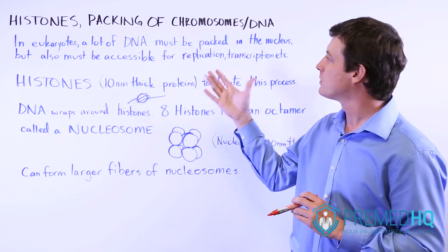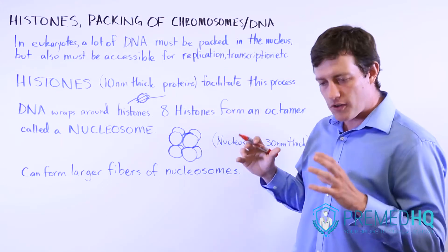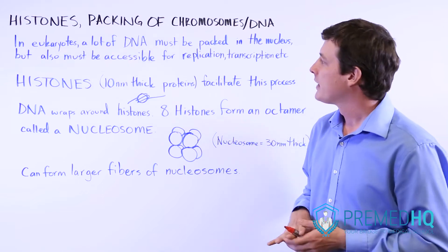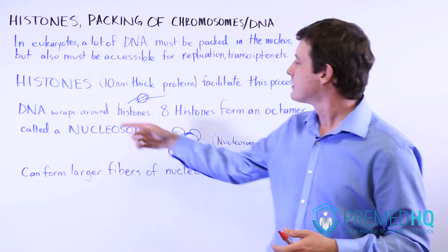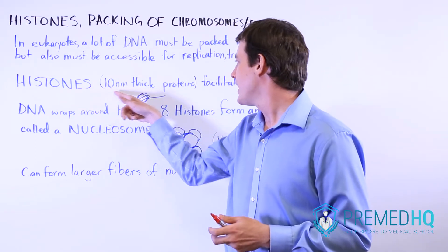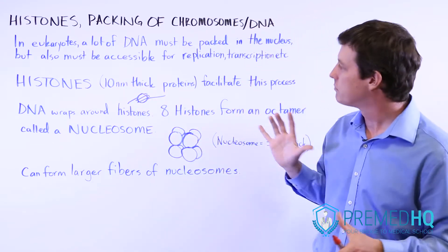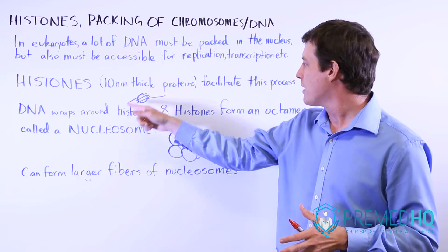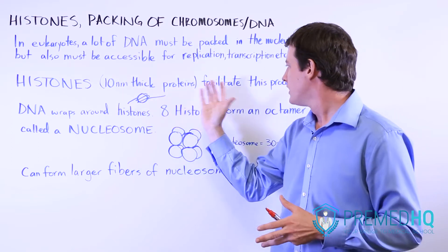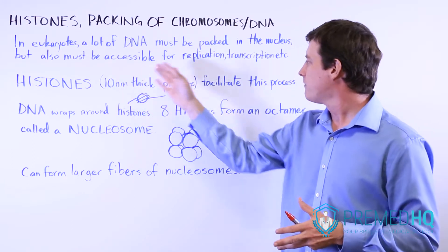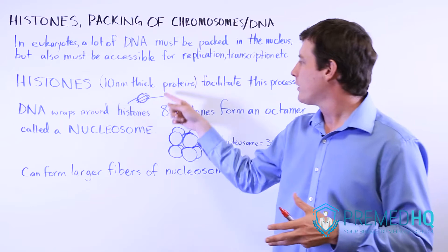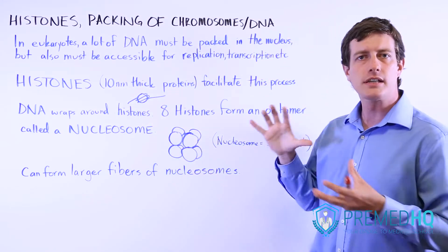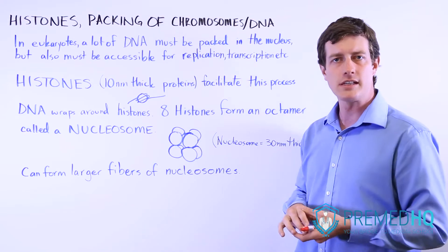An answer was developed that involves packing this DNA using proteins known as histones. A histone is approximately 10 nanometers thick, and what happens is the DNA wraps around these histones — they facilitate this process by allowing the DNA to wrap around them. But that alone isn't enough to condense the DNA so that it fits into the nucleus.